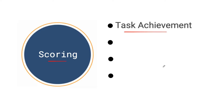The IELTS examiners will be looking for four things when grading the writing task 2 essay. The first thing is task achievement. This basically involves the question: did you fully answer the question that was given to you, and did you present it in a fully developed answer? We want to avoid things that are half written or half argued — we really want to make sure everything is fully developed.